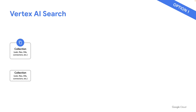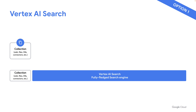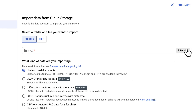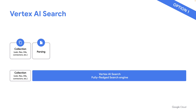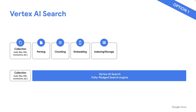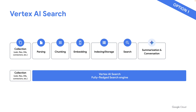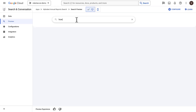Vertex AI Search simplifies RAG a lot by taking care of essentially all of the components of a RAG system once you collect your data — from parsing of unstructured data sources (that includes PDFs, docs, HTML files, PowerPoint files, and a few other formats), to chunking, to embeddings, and indexing and storage of embeddings in vector databases, to actually implementing the logic of a search application with summarization and answer generation by Gemini, and serving all of that. Vertex AI Search even gives you a vanilla UI you can embed on a website.